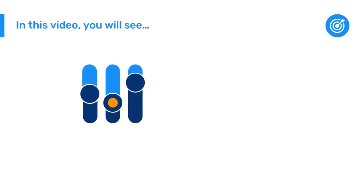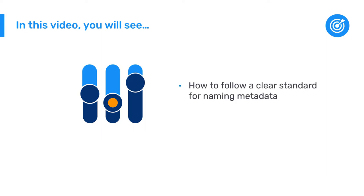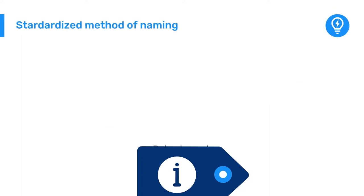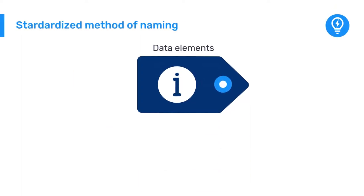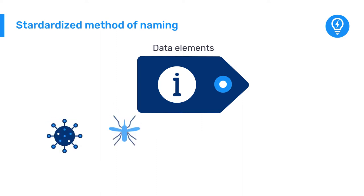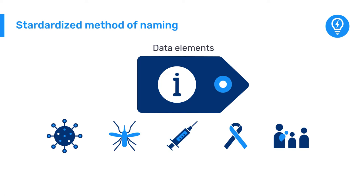In this video, you will learn about one crucial aspect of maintaining a well-functioning DHIS2 system: following clear standards for naming metadata. Let's take data elements as an example. When creating new data elements, a standardized method of naming them should be followed by all users of the system. This will mean some coordination both within and between different programs or services as necessary.